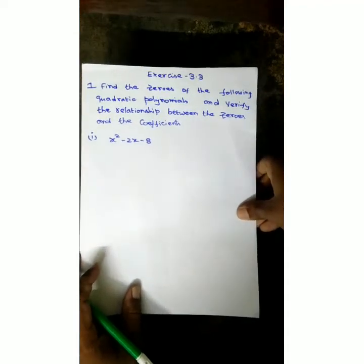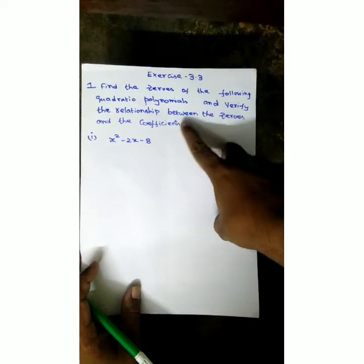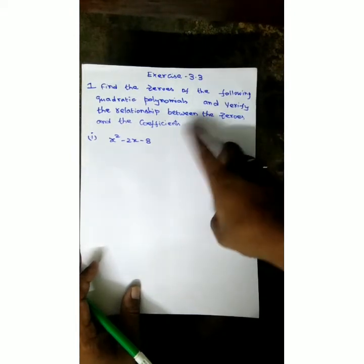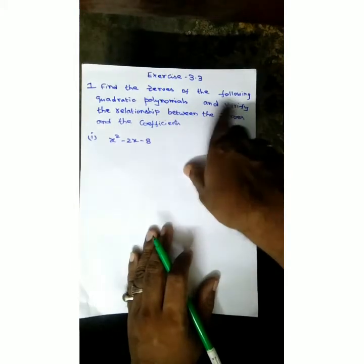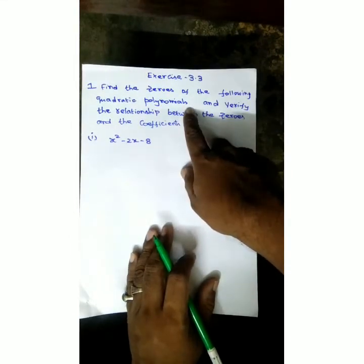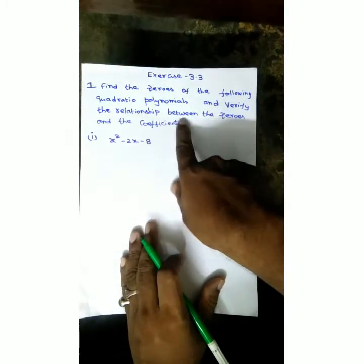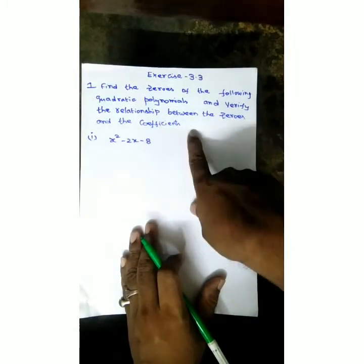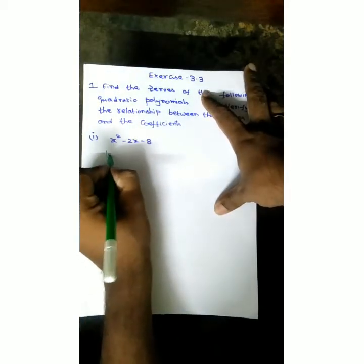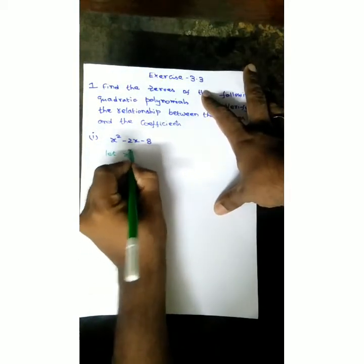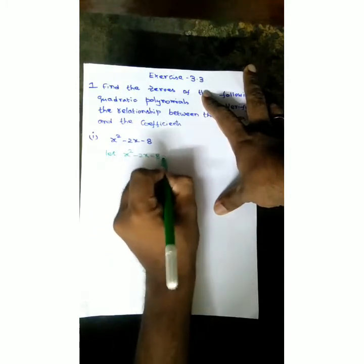Now exercise 3.3, first problem. Find the zeros of the following quadratic polynomials and verify the relationship between the zeros and the coefficients. So find the zeros of the following quadratic polynomials. First find the zeros and verify the relation between the zeros and the coefficients. Let the polynomial be x square minus 2x minus 8 is equal to 0.